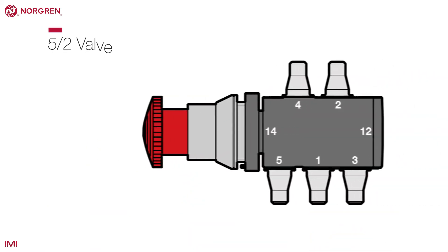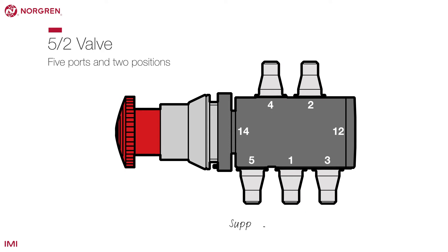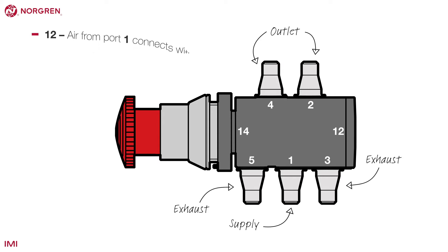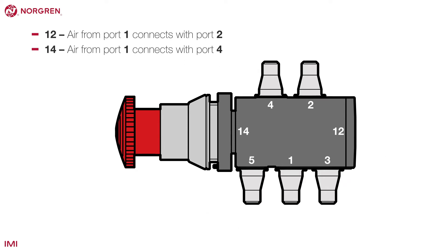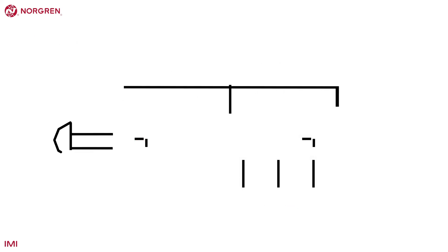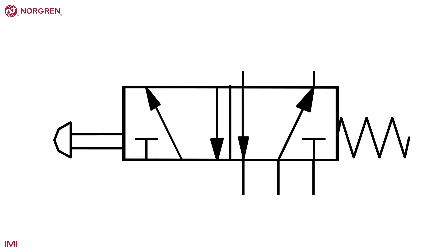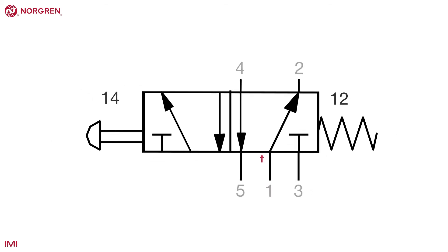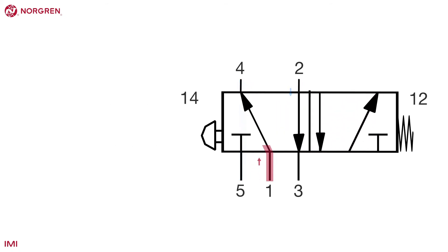A 5-2 valve has 5 ports and 2 positions. There is still 1 inlet, but now there are 2 outlets and 2 exhausts. The 2 positions are air to port 2 outlet or air to port 4 outlet, so the operation for this valve would be 1-2 and 1-4. When the air flows to port 2, the air from port 4 passes to the exhaust. When the air flows to port 4, the air from port 2 passes back through the exhaust.